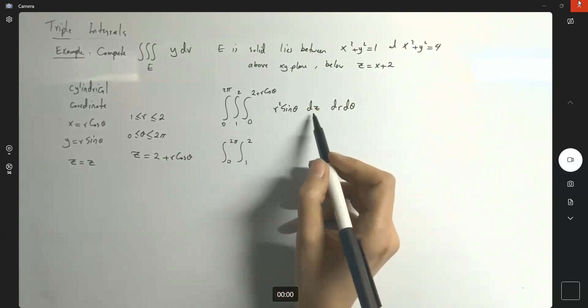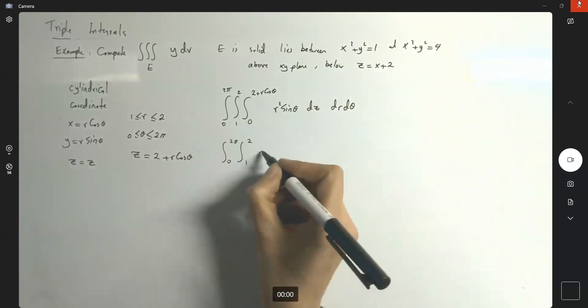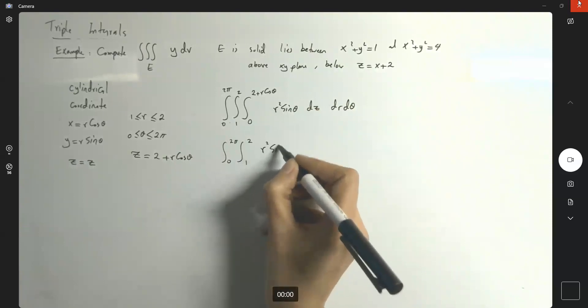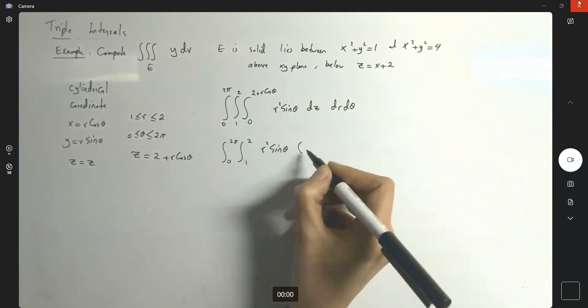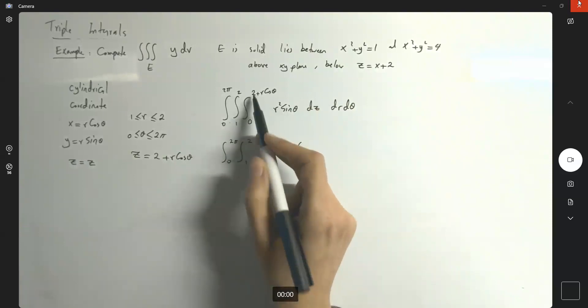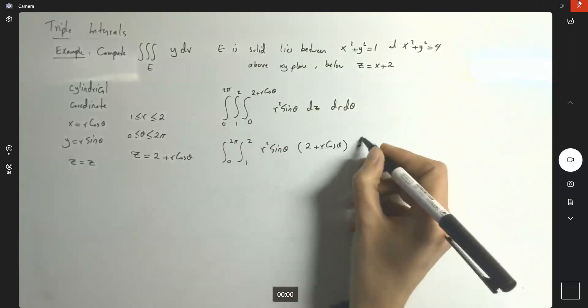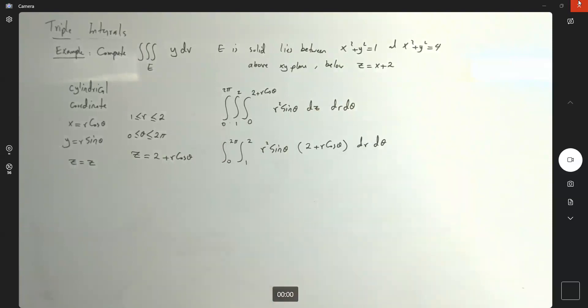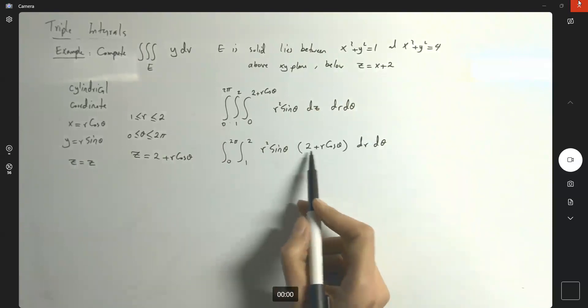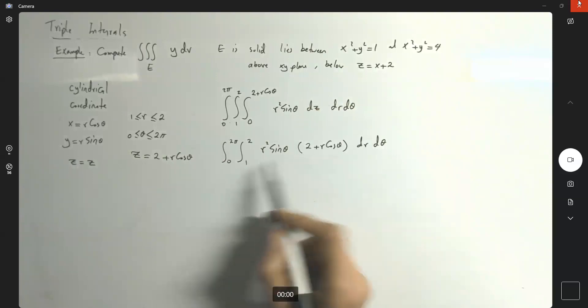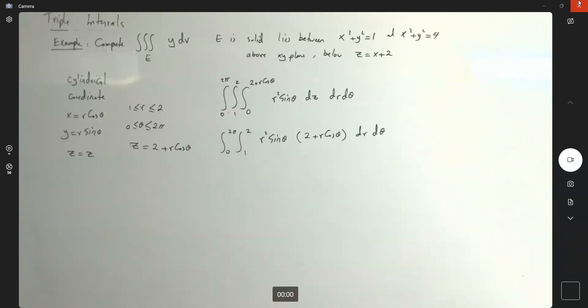So I have r squared sine theta. And my inner integral is with respect to z. So it doesn't change anything. You have r squared sine theta and z, which is bounded between 0 and 2 plus r cosine theta. So note that here you have 2 plus r cosine theta. We cannot separate these. We have to do the computation as it is.